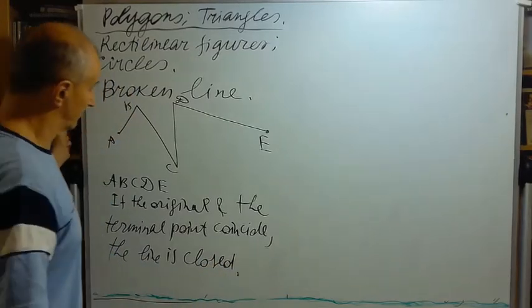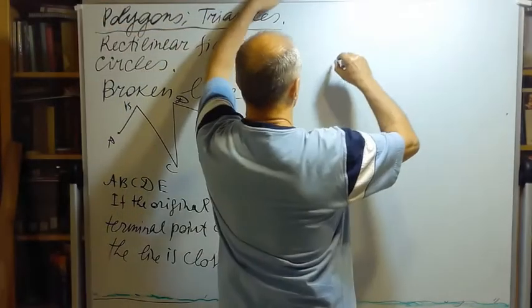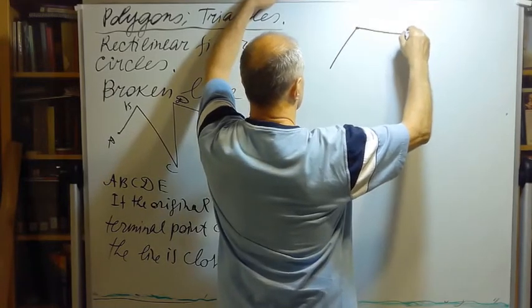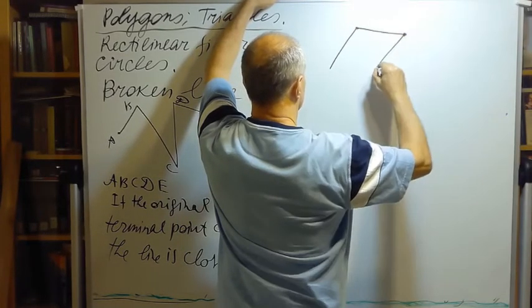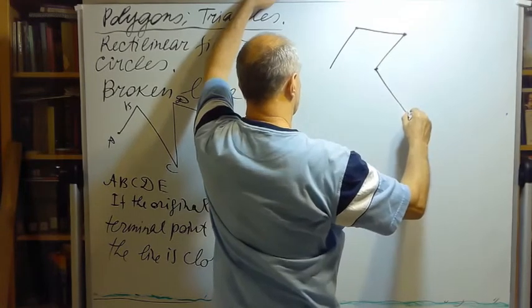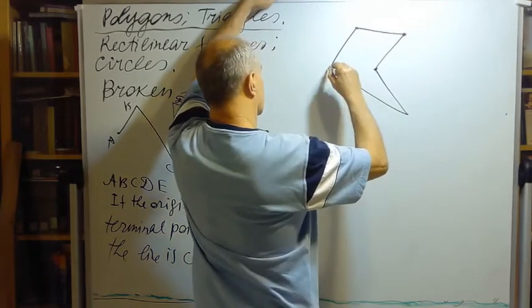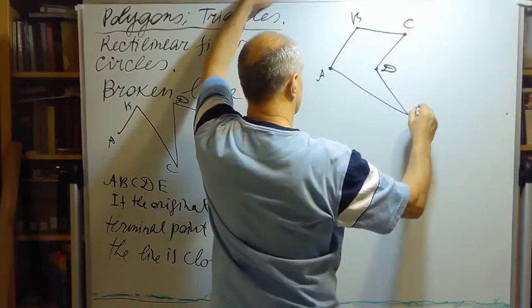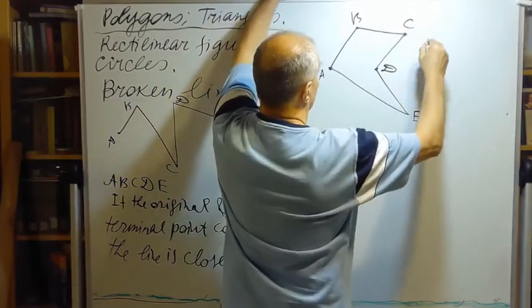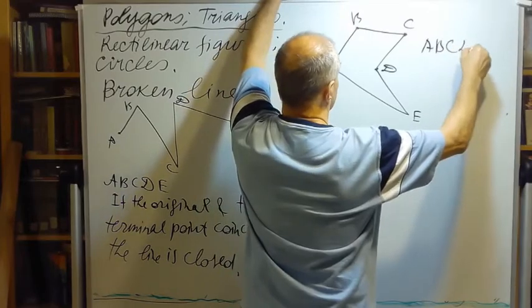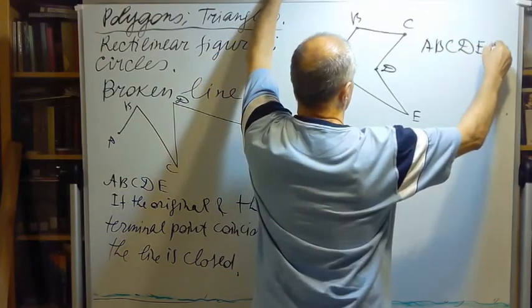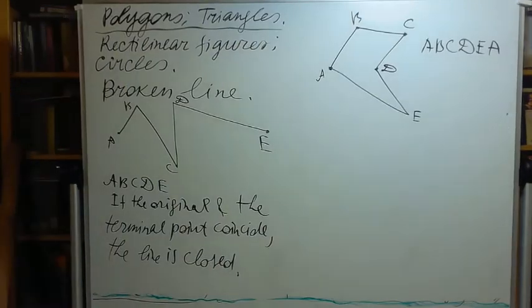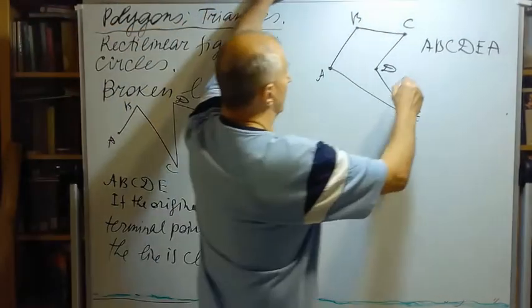Such lines - I'll draw a broken line, for instance, like this. And this, maybe like this, and then like this: A, B, C, D, E, A. That's a closed broken line. It's also called a polygon.